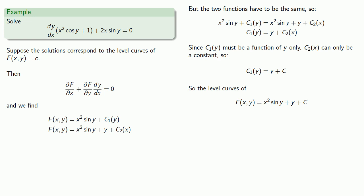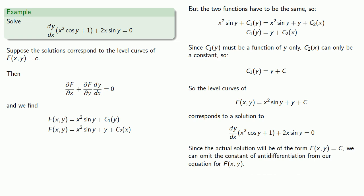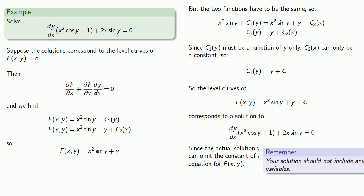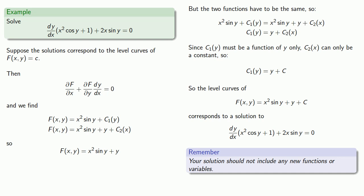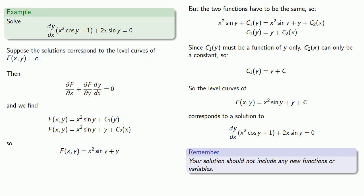The level curves of f of x, y equals x squared sine y plus y plus a constant correspond to solutions of our differential equation. Since the solution is of the form f of x, y equals some constant, we can omit the constant of anti-differentiation, so f of x, y equals x squared sine y plus y. A good rule is that the final answer should not include any new functions or variables, so the general solution is simply x squared sine y plus y equals c.